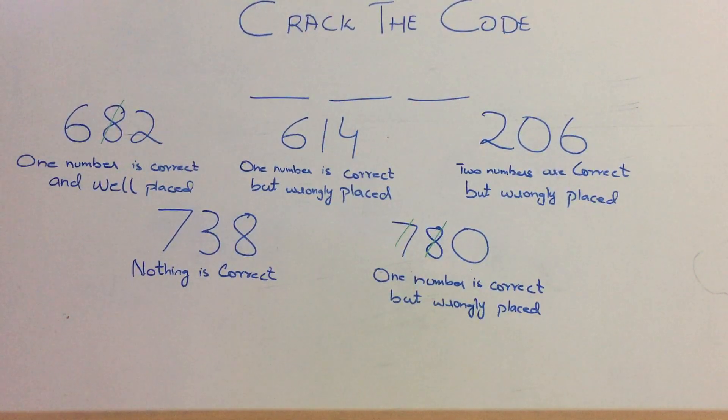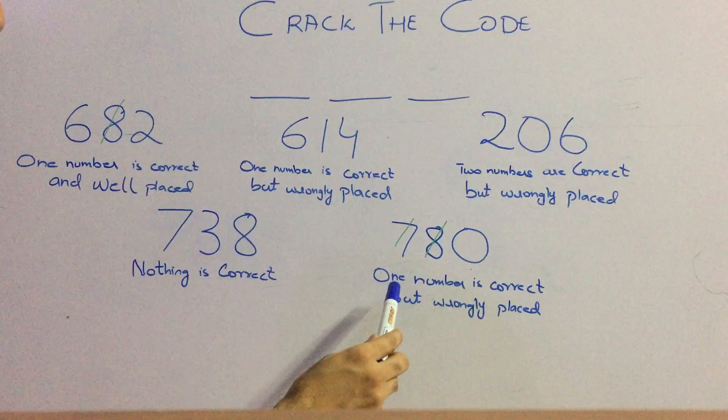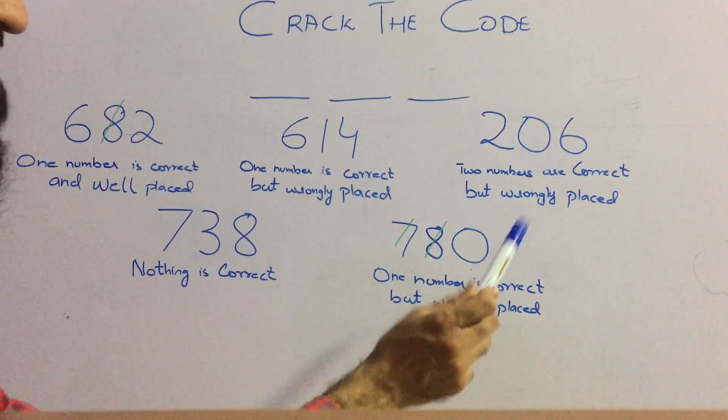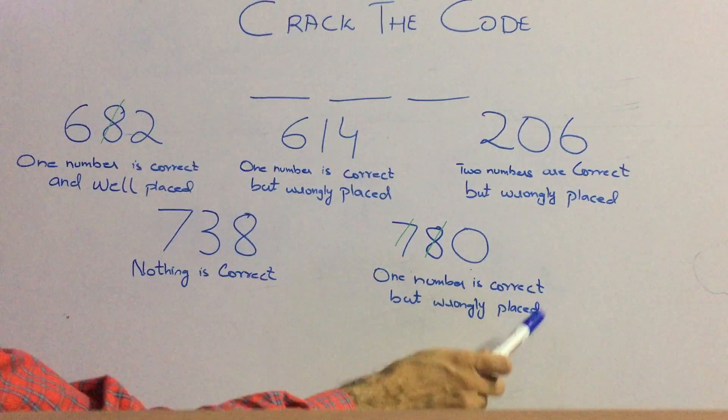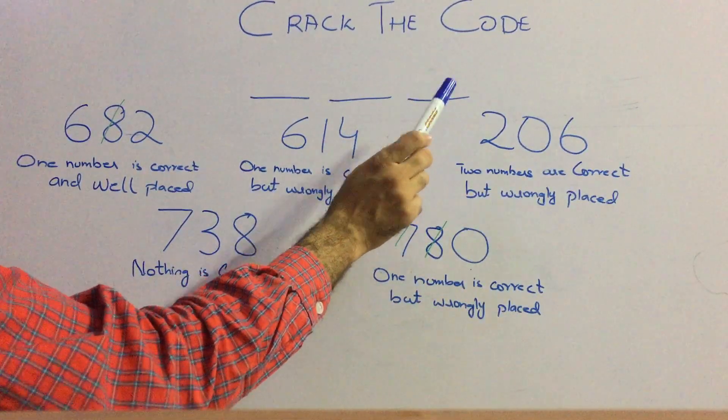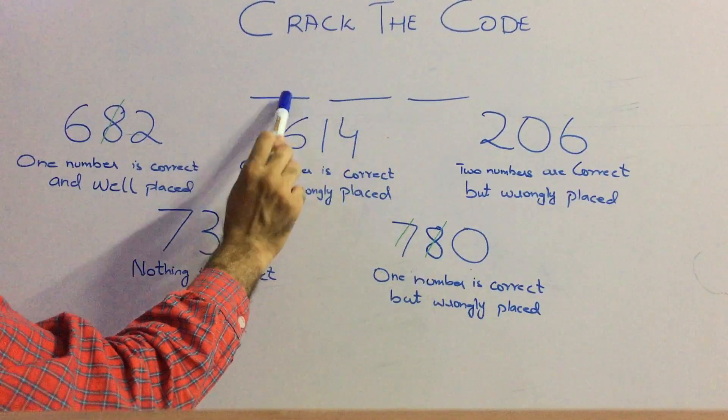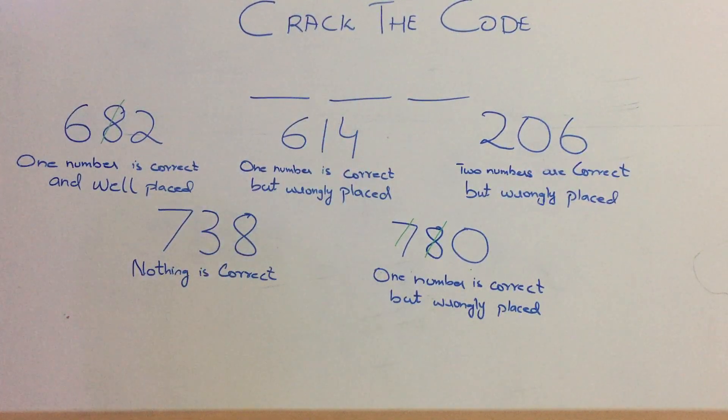In hint number 5 we are left with only one number, and it has been written that one number is correct. So the 0 is correct but wrongly placed. The 0 won't be in this third position, so 0 will either be in the first position or in the second position.